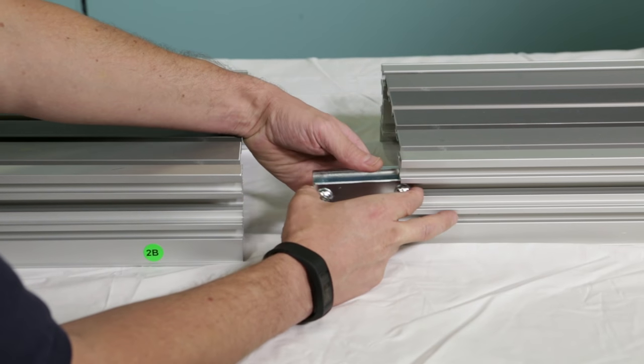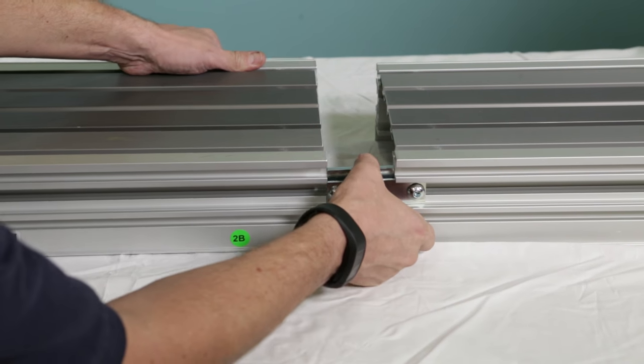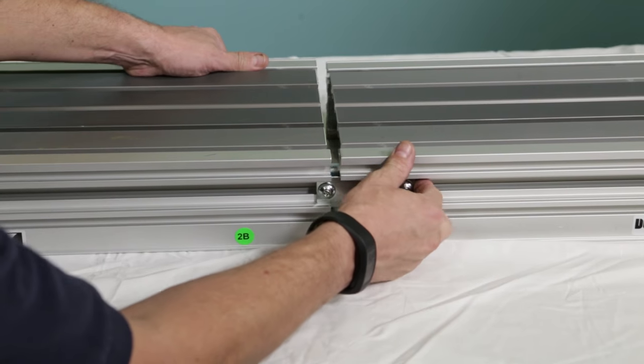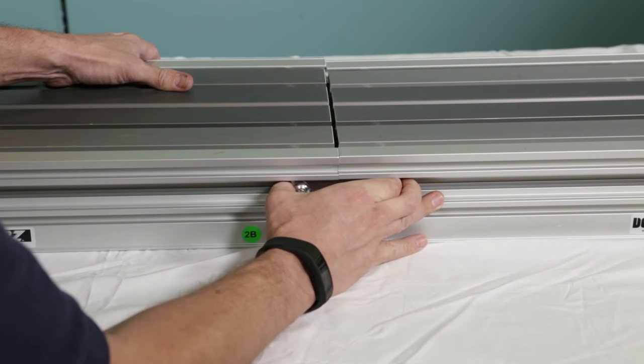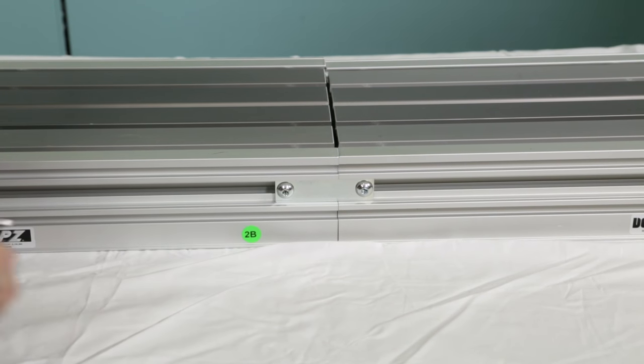For conveyors with multiple frame sections, you'll need to attach the sections with a connector bracket. Install the connector bracket onto both frame pieces and tighten screws.